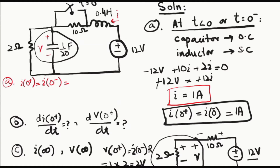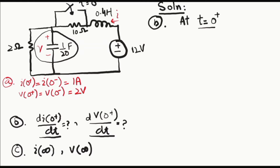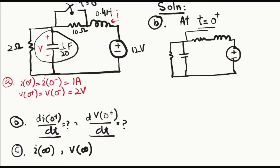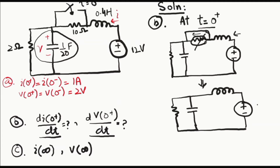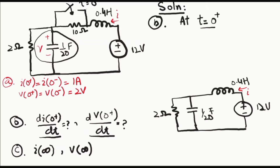Now let's move to part B — just after the switching time. The switch is closed at t equals zero, so we redraw the circuit with the switch closed. There is a short circuit path in parallel with the resistor, so all current flows through that short path and the resistor is eliminated. This is the final circuit, with the capacitor voltage and inductor current as our focus.